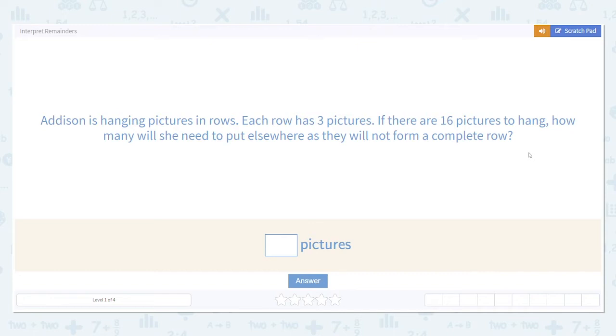Addison is hanging pictures in rows. Each row has three pictures. If there are 16 pictures to hang, how many will she need to put elsewhere as they will not form a complete row?